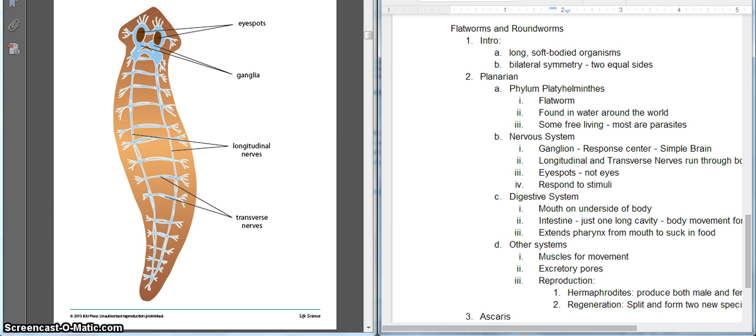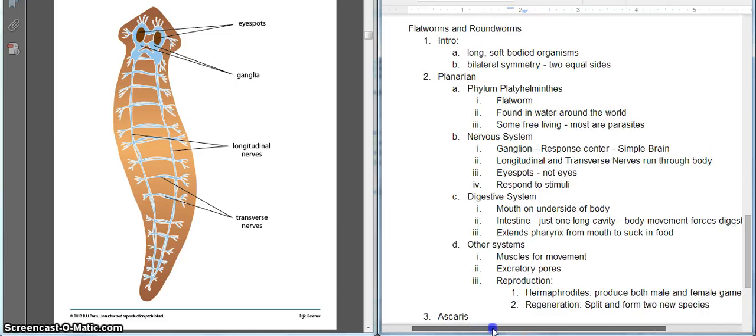Here we have a nice diagram of a planarian. This is a flatworm over here on the left. On the right, we are looking at flatworms and roundworms. I'm going to scoot this over so we can get the whole thing here. Introduction to these guys.